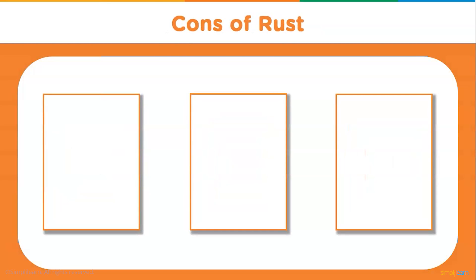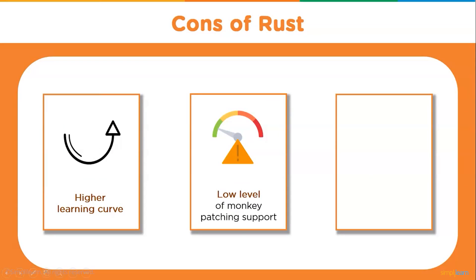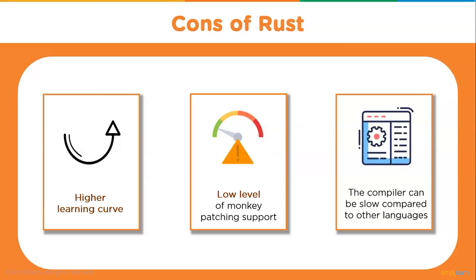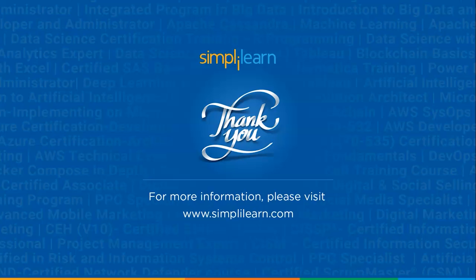Now let's look at some cons of Rust. Learning Rust is not easy compared to other languages, giving it a higher learning curve. It also has a low level of monkey patching support compared to Python and Ruby — monkey patching referring to modifying a class or module at runtime. Additionally, the compiler is slow compared to some scripting languages.